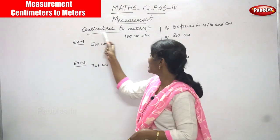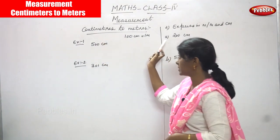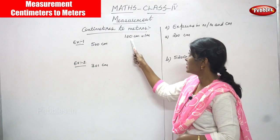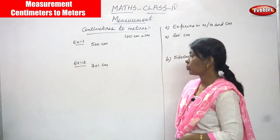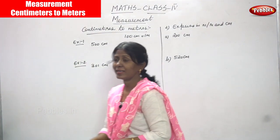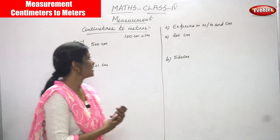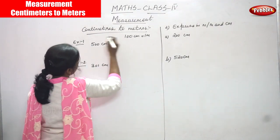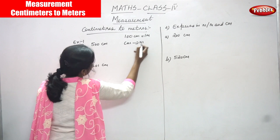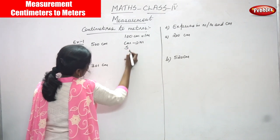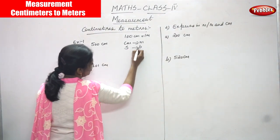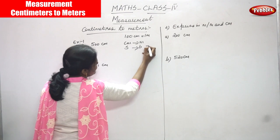Now we are going to see centimeters to meters — converting centimeters to meters. So 100 centimeters equal to 1 meter. That means for 500 centimeters, centimeter is a smaller unit and meter is a bigger unit. So small to big means division.